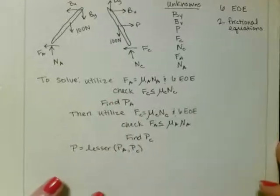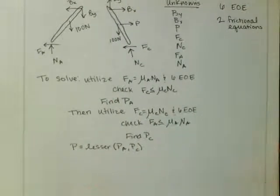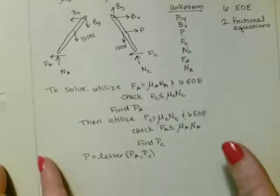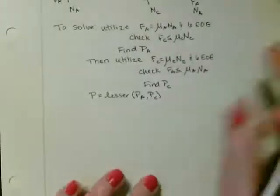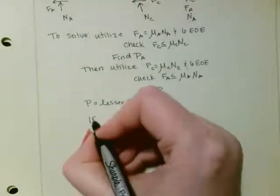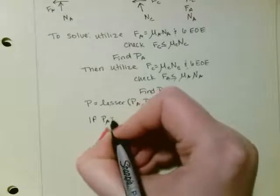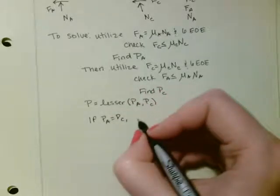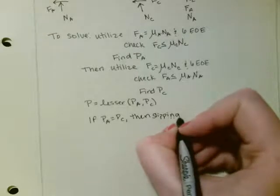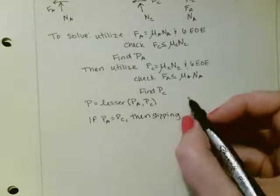And so, in some of these problems, when you have impending motions at some points of contact, you're going to have to solve the problem multiple times and then determine which one is the least, which one is going to need the least amount of force. And then in some odd cases, PA will equal PC and then the slipping at both points occurs at the same time.